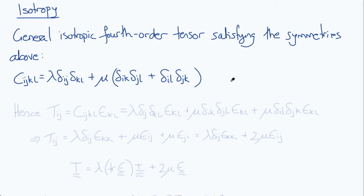Now substituting this into our linear expression for stress-strain relation, we get Tij equals Cijkl times εkl is equal to lambda times δij δkl εkl plus mu times δik δjl times εkl plus mu times δil δjk εkl.